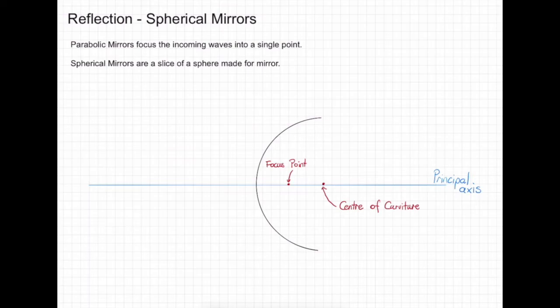A concave mirror means the light is shone from the inside of the mirror, so it would be coming from the inside in here, shining towards the mirror. This would give us a concave mirror.